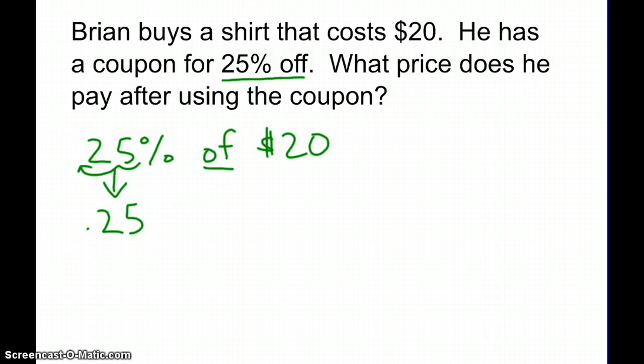We know in math the term 'of' is used to represent multiplication, so we're going to do 25 hundredths times $20. Now that's going to give us a product of $5.